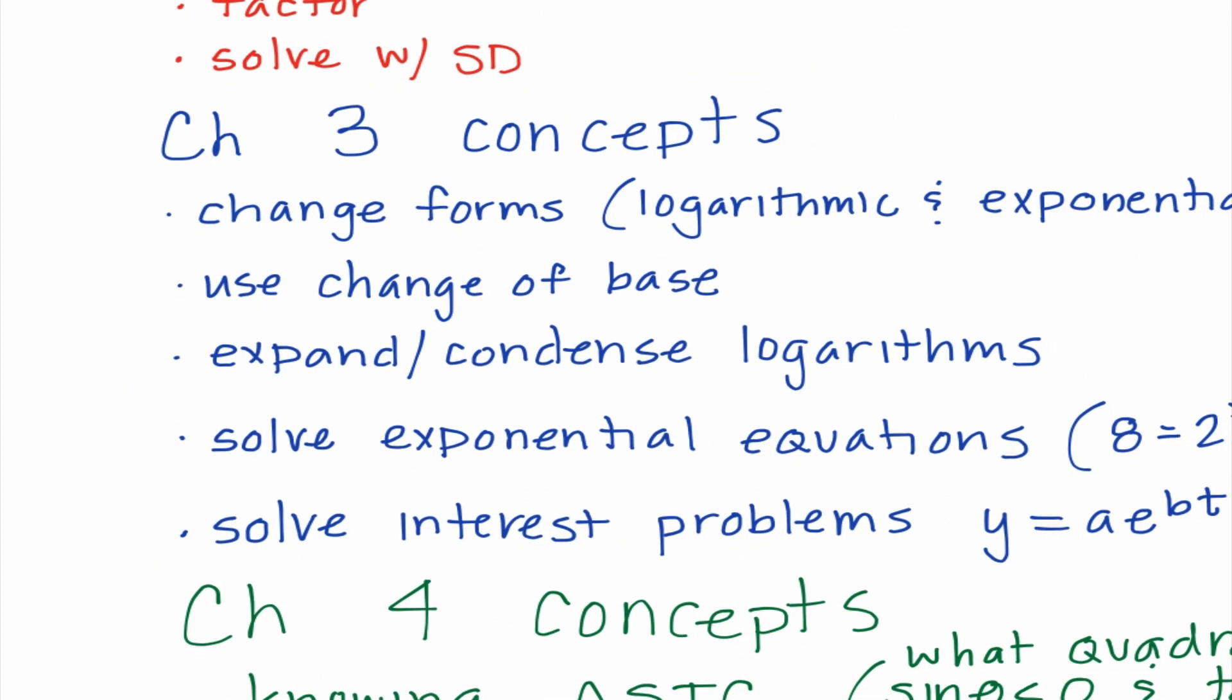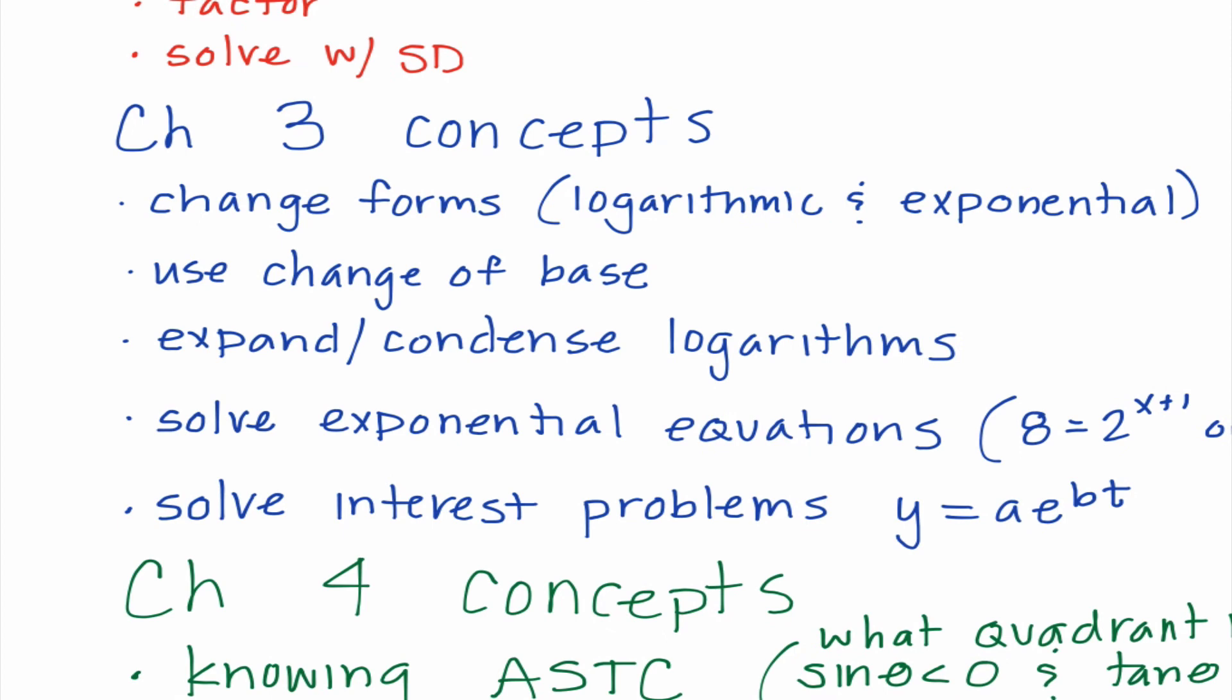Moving on here, Chapter 3. Chapter 3 was dealing with logarithms. And as you can see, there's not quite as many concepts we're going to talk about here. The first thing you need to know is how to change forms. So we need to change things from logarithmic form to exponential form and vice versa. You need to know how to use change of base. So if we had something like log base 2 of 5, you would do log of 5 divided by log of 2. We need to know how to expand and condense logarithms. So that was using the product property, the quotient property, and our power property.